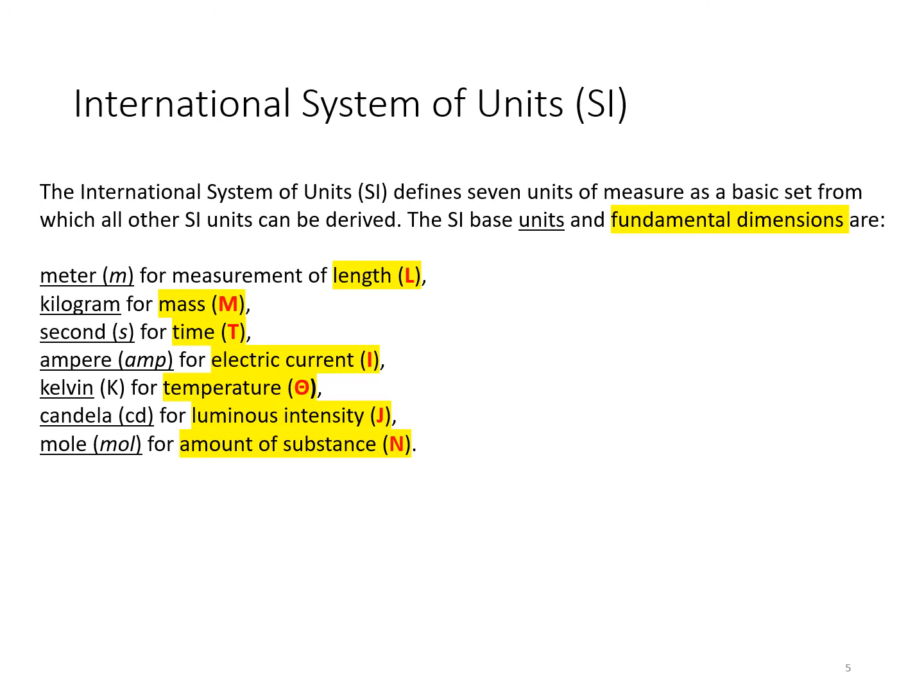We have basic units and their associated dimensions. The dimensions are specific attributes of the universe, fundamental things like length, mass, time, electrical current, temperature, luminous intensity or brightness, and the amount of a substance. For those, you can see the associated units. We use meters, kilograms, seconds, amperes, Kelvin, candela, and moles to measure those fundamental properties of the universe.